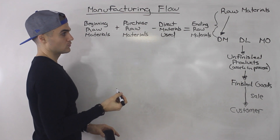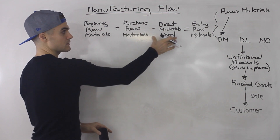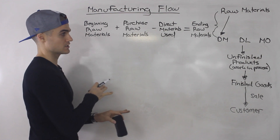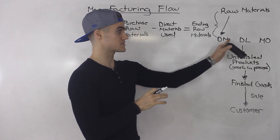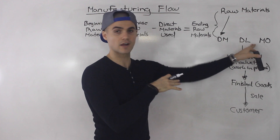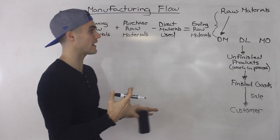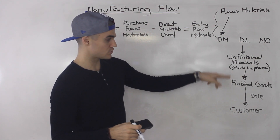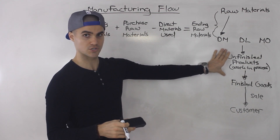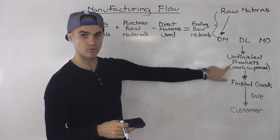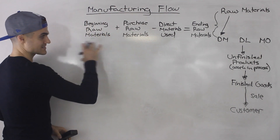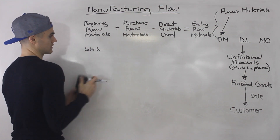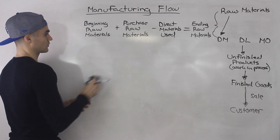Now what's going to happen is those direct materials get put into production. You're going to have direct materials, labor working on those direct materials, and manufacturing overhead for the entire factory making the products. Before you get finished goods, you're going to have some unfinished goods — work in process. So the next flow: you're going to have some beginning work in process, basically some products that are still being worked on in production.